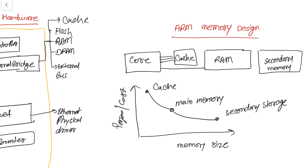To understand this, compare it with your computer system architecture. A general computer has cache memory tightly coupled with the processor, then RAM, then a hard disk. Cache size is very low — only a few MB, up to 10 or 20 MB maximum in large system designs.